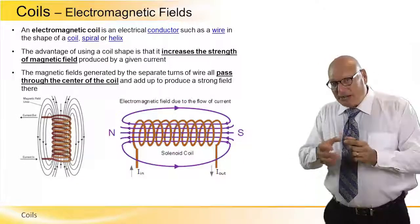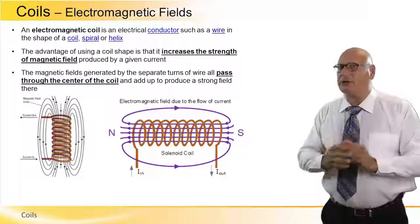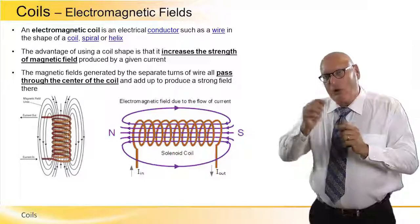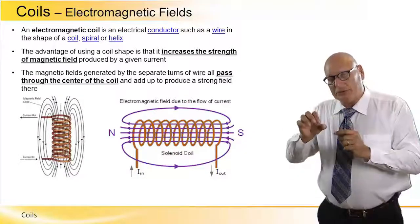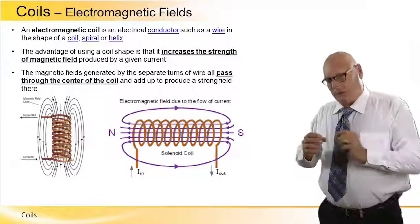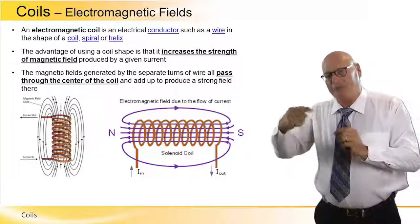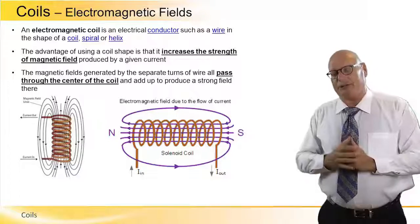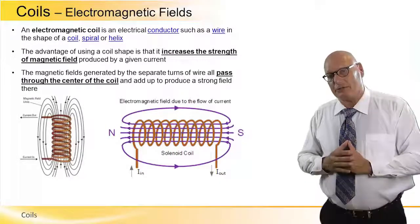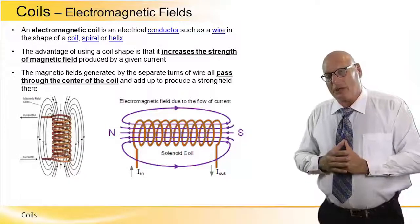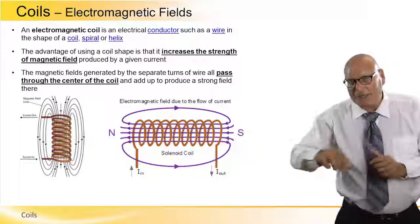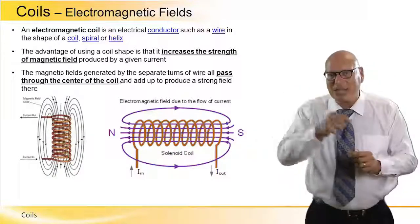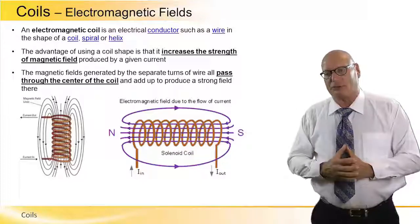They all pass through the center — this is very, very important. When the coil has a smaller diameter with a high number of turns and a large current flowing through them, the electromagnetic field inside this limited space will be very, very strong and intense.